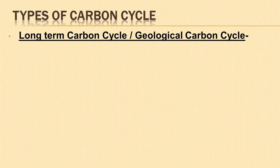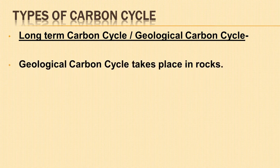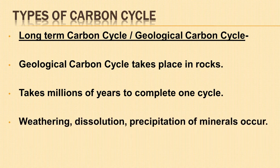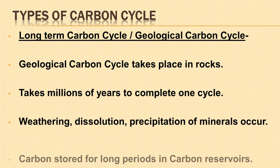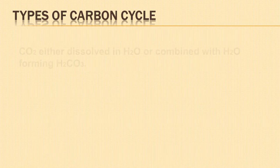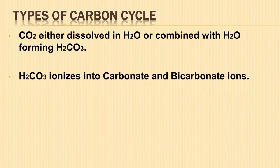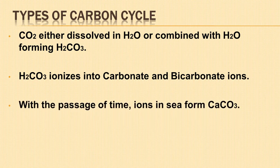The second type is the long-term carbon cycle, also called the geological carbon cycle or slow carbon cycle. It is a geological carbon cycle which takes place in the rocks and takes several millions of years to complete one cycle. The different geochemical processes which occur in this carbon cycle are weathering, dissolution, precipitation of minerals, volcanic eruptions, etc. Carbon is stored for long periods in carbon reservoirs. Carbon dioxide from the atmosphere combines with water to form carbonic acid, which ionizes into carbonate and bicarbonate ions. The ions in the sea form calcium carbonate, which is a major component of shells of marine animals.